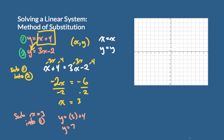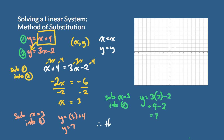You don't have to do this every time, but let's verify: sub x equals 3 into the other equation to see if we get the same answer. y equals 3 times 3 minus 2, which is 9 minus 2, which equals 7. We get the same answer.